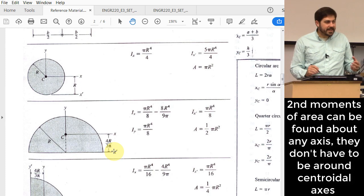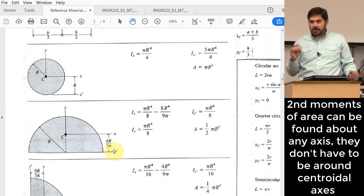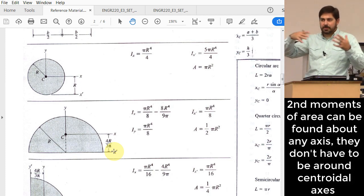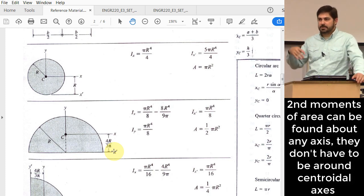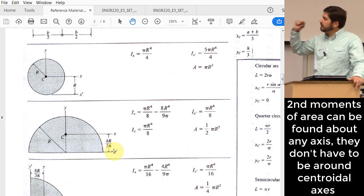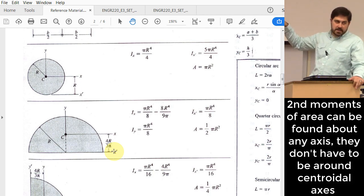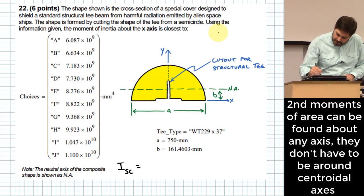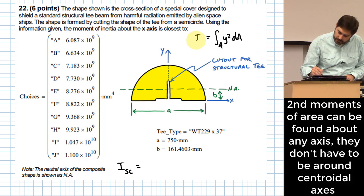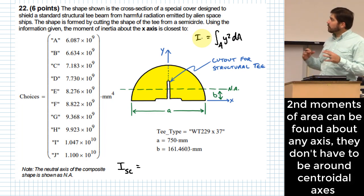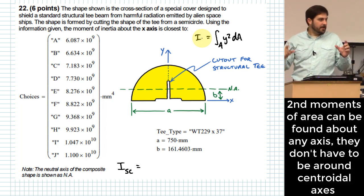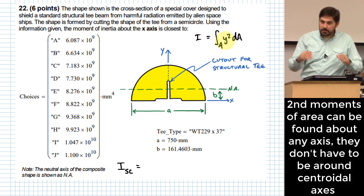So the question was, what is that? We are used to these second moments of area being useful when we take them about a centroidal axis because that is the parameter we use in formulas like mc over i or like the beam deflection formulas. We were always doing them around the neutral axis. If you might remember the formula that all of these come from, they are an integral over an area of y squared dA. So it turns out that the coordinate system that makes that useful is the one where our coordinate system is centered at the centroid.